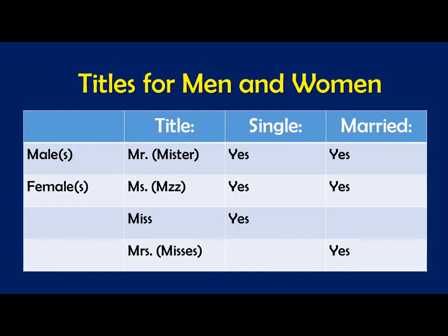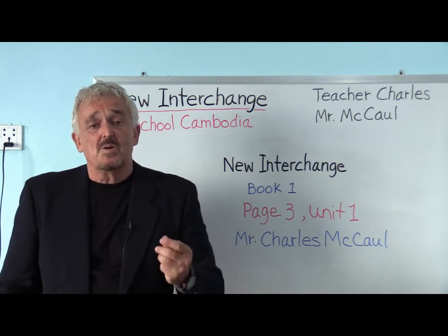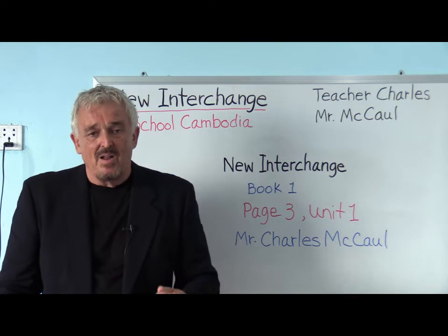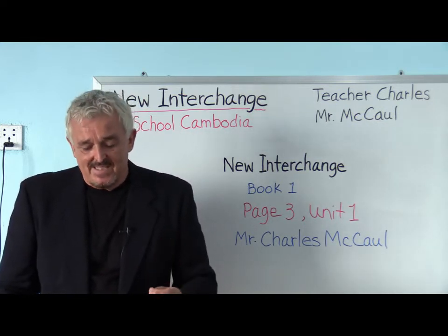For a female, whether she is married or single, we can call her Ms. — capital M, small s, period — but we do not pronounce it 'miss'; the S has the Z sound, so we say 'Miz.' For a single girl we call her Miss. For a married woman we usually use Mrs. — capital M, small r, small s, period — and we say 'missus.' So: Mr., Ms., Miss, and Mrs. are the titles for men and women.